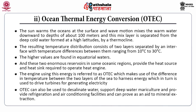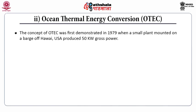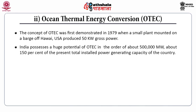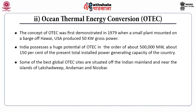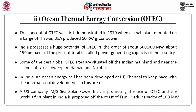OTEC can also be used to desalinate water, support deep water agriculture, provide refrigeration and air conditioning facilities, and aid in mineral extraction. The concept of OTEC was first demonstrated in 1979 when a small plant mounted on a barge off Hawaii, USA, produced 50 kilowatt gross power. India possesses a huge potential of OTEC, estimated at about 5 lakh megawatt — about 150% of the present total installed power generating capacity of the country. Some of the best global OTEC sites are in the Indian mainland and near the islands of Lakshadweep, Andaman and Nicobar. An ocean energy cell has been developed at IIT Chennai, and a U.S. company Sea Solar Power is promoting OTEC use — the world's first OTEC plant in India is proposed off the coast of Tamil Nadu with a capacity of 100 megawatt.